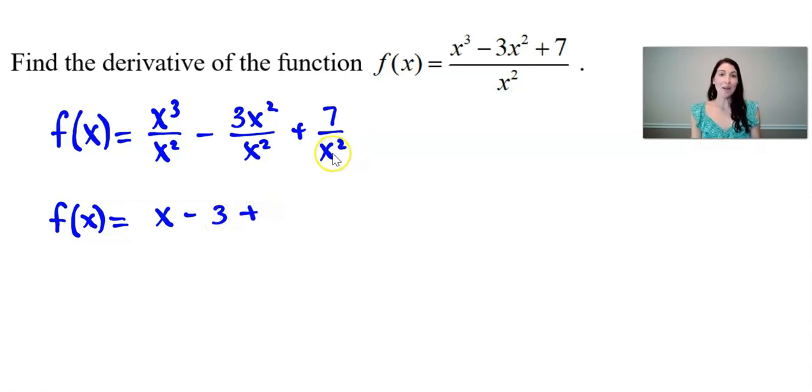Now I'm going to write this third term a different way and that's because I'm going to want to use the power rule. So I'm going to rewrite this third term as 7x to the negative 2nd using my exponent property of making that exponent negative when it is in the denominator.